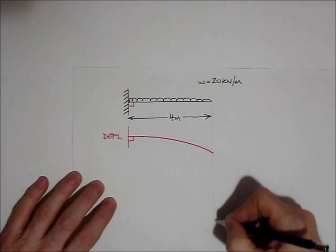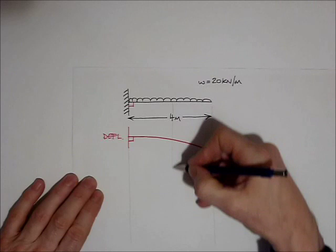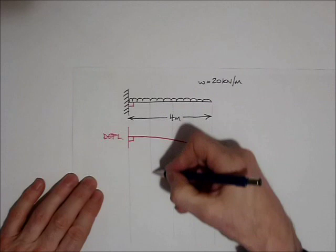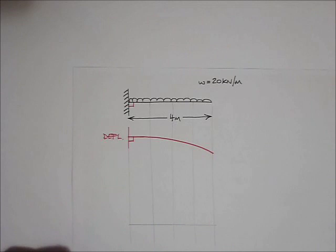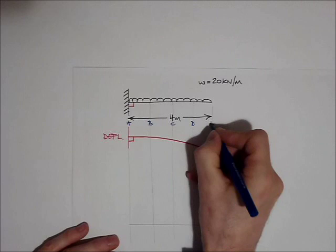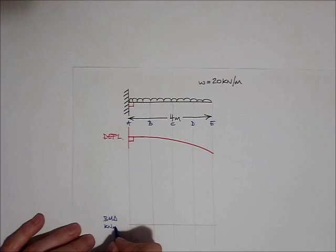Now what I want to do is calculate the bending moment at a number of points along the length of the beam. So I'm going to divide the beam up into four portions and I'm going to work out the bending moments at points A, B, C, D and E. And then draw my bending moment diagram and I'm going to use the units of kilonewton meters.